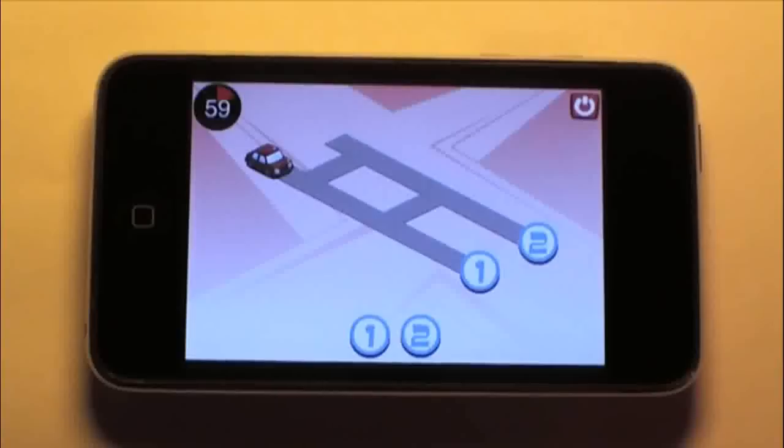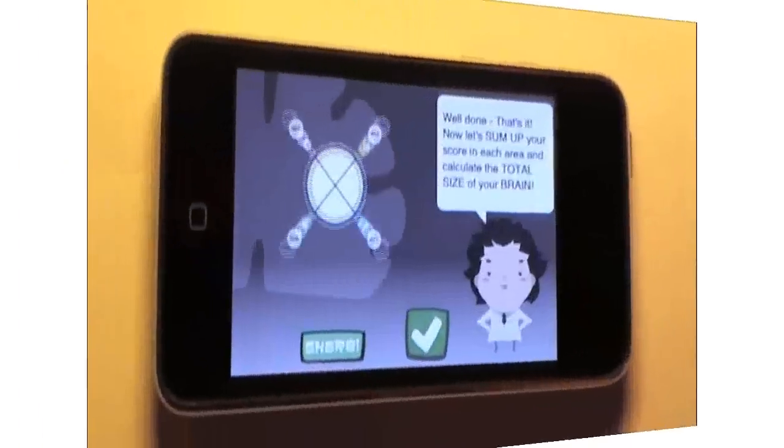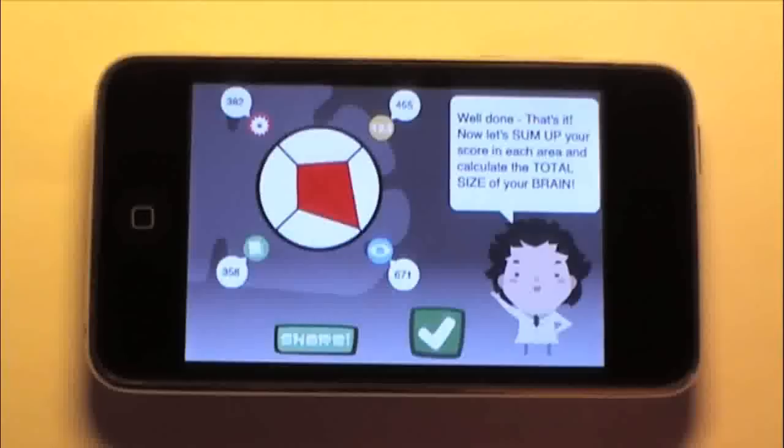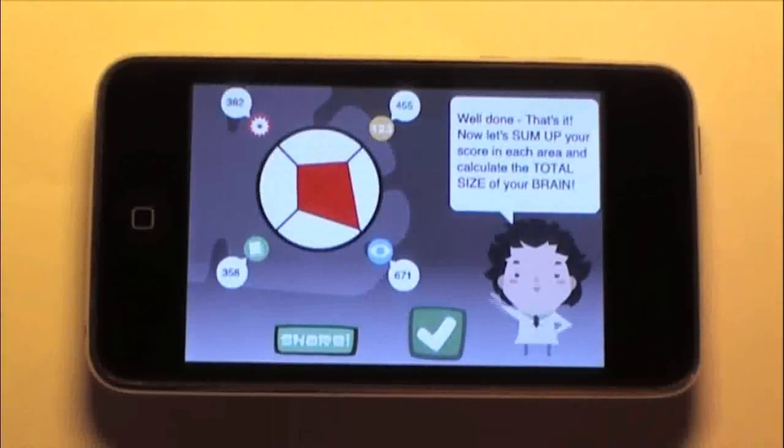In the main part of the game, you play one randomly selected minigame from each category, and at the end you are presented with a score for each category, an overall brain size score and a fun ranking such as scientist brain or genius brain.